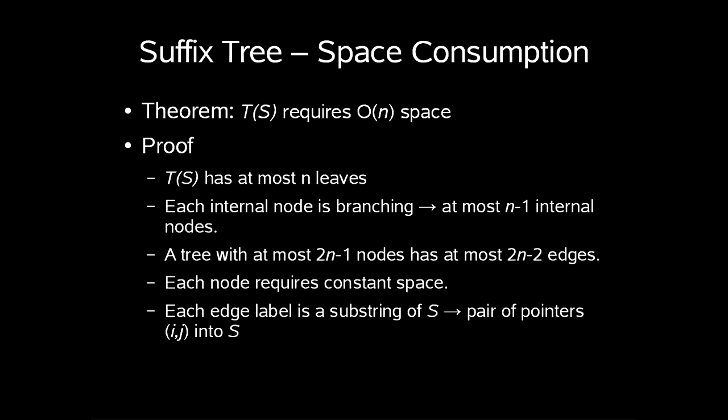We know that T of s has at most n leaves. At most each of these internal nodes will branch at most n-1 internal nodes. This will create at most 2n-2 edges. We state that a node requires constant space. Each label on our edge is a substring of our s, so we can store this as a pair of pointers into our string s. I hope you agree with me that this will give us order n space.